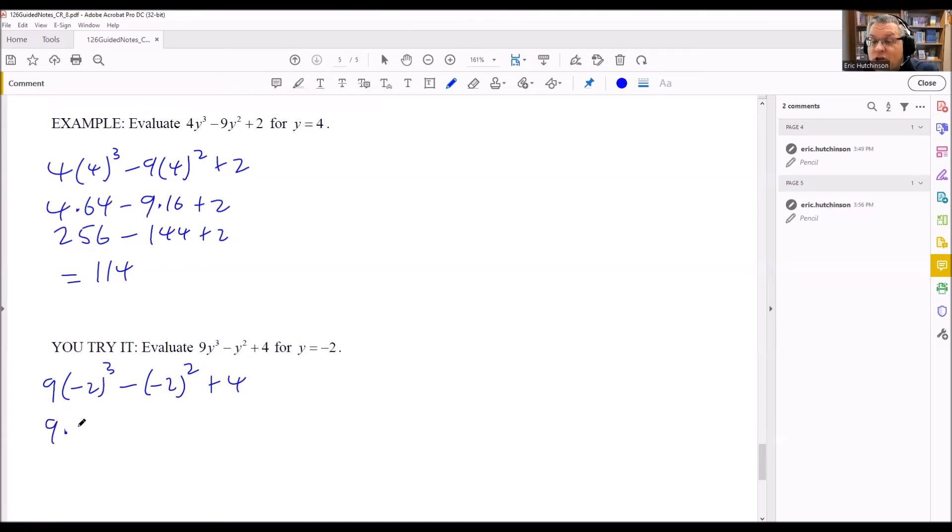So this, you're actually going to get 9 times negative 8 here, because negative 2 times negative 2 times negative 2 will give you a negative 8. There's a minus here that's between these two. That's part of the original problem. Now this, negative 2 squared, is going to give you a 4. Now it is a positive 4.